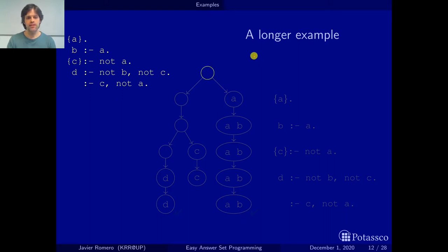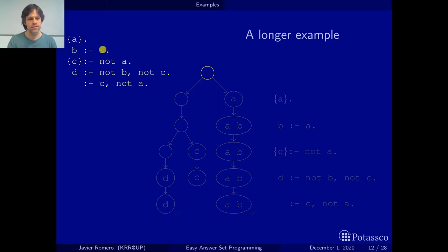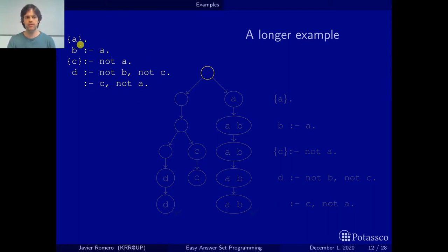Let's see this example. Initially, we build the answer set incrementally — we start with the empty set. These two rules have A, so we must wait to apply them until we have applied A. These two have B, C, and A, so they must wait for all of these. So initially, we can only apply the choice rule, which gives us two sets — and we already know these two are the answer sets of this sub-program.